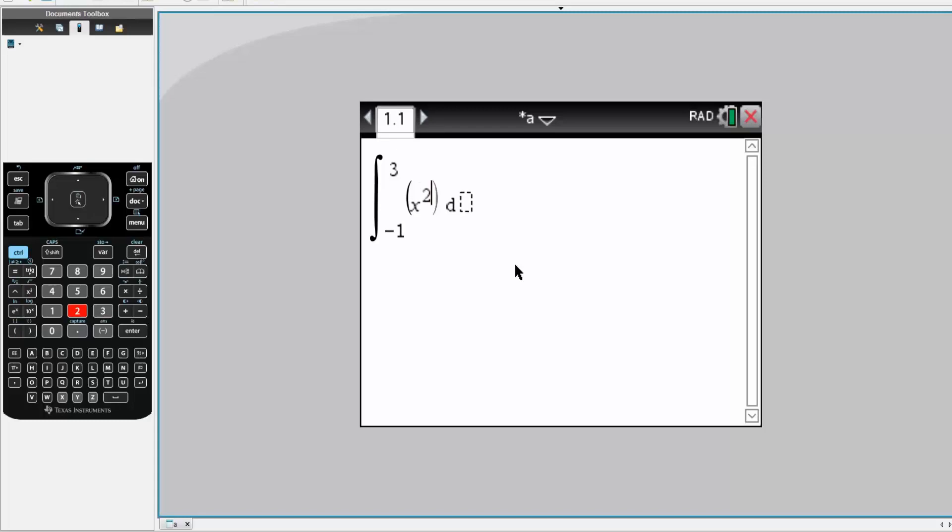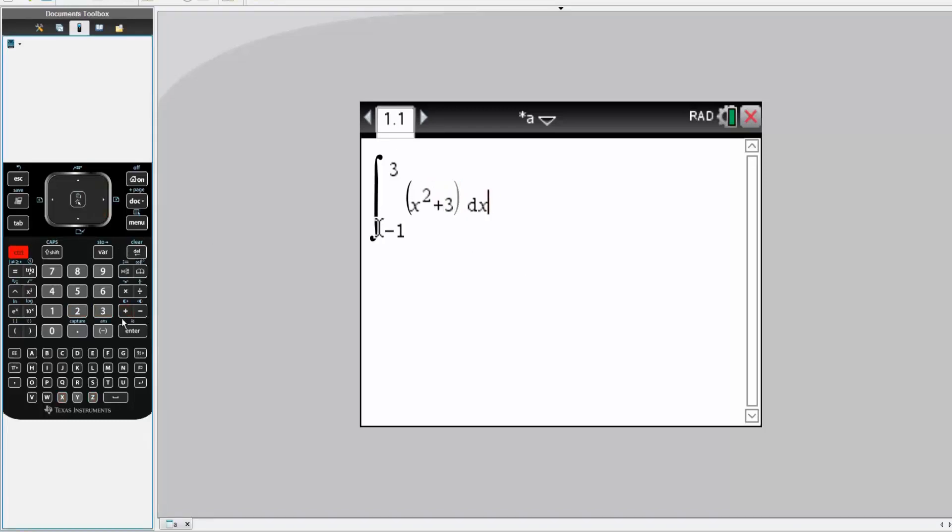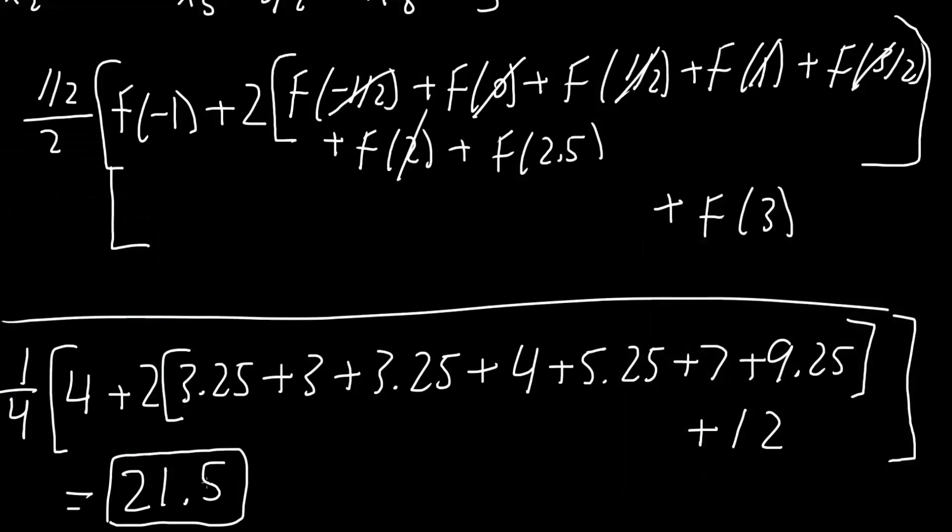It's a definite integral, so it's negative 1 to 3, and we had x squared plus 3 in terms of dx. Simply hit control enter, and the actual answer is 21.333. We got 21.5, so this is a pretty good approximation, and that's all we need to do to solve this problem.